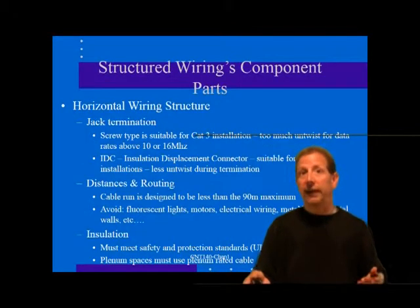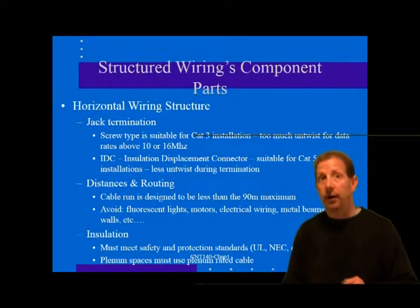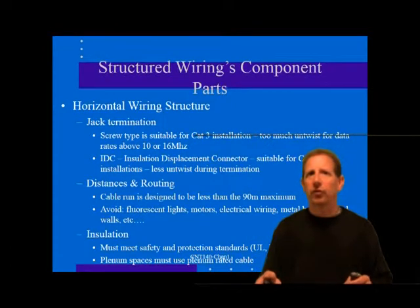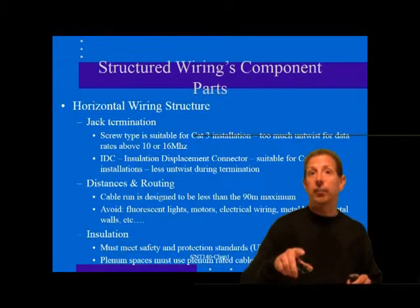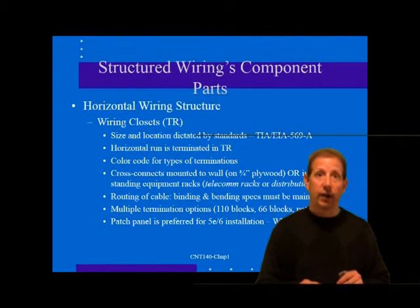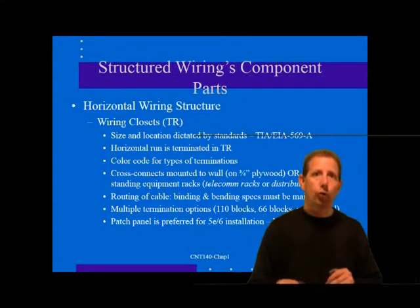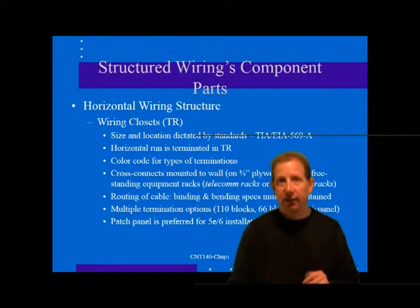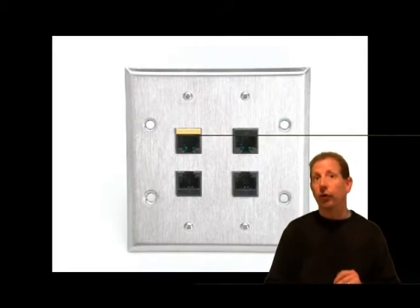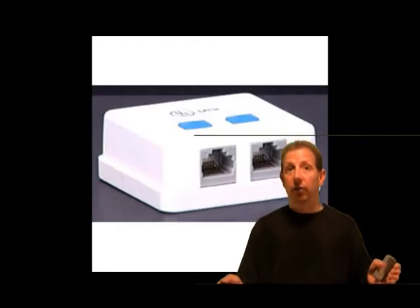Cat 7 is the first standard that allows deviation from the ubiquitous eight-position modular connector (the RJ45). The connectors and cables look quite different from lower-rated categories, making a Cat 7 installation easier to spot. To the casual eye, Cat 5e and Cat 6 cable and components look identical but vary widely in their performance. In the horizontal wiring structure, the station cable is terminated at each user workstation with the appropriate jack — typically an eight-pin modular female connector in a flush-mount wall plate.